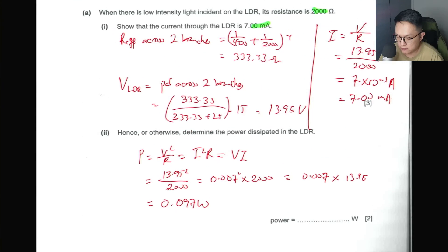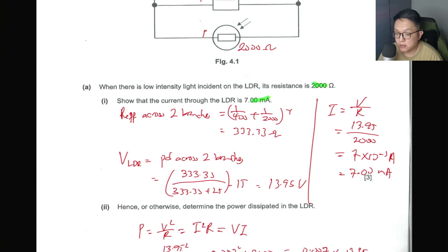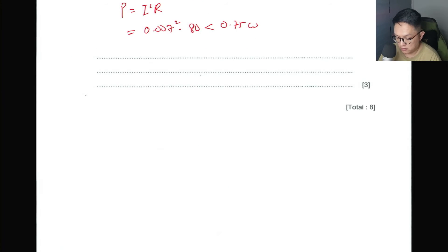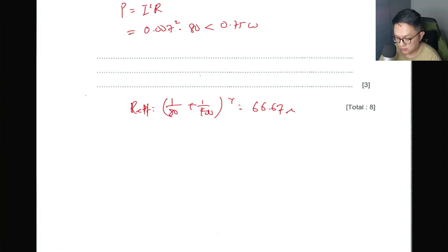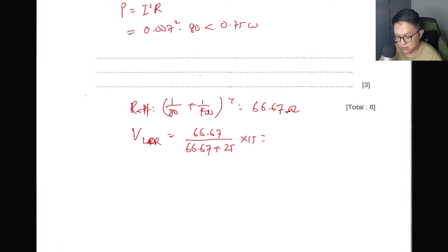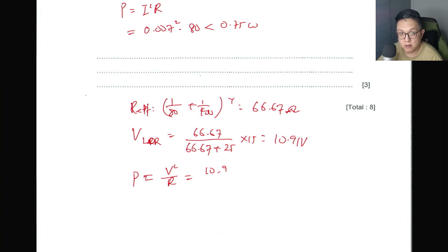Repeating the steps with R_LDR = 80 Ω: R_eff = 1/(1/80 + 1/400)⁻¹ = 66.67 Ω. Then V across the LDR = (66.67 / (66.67 + 25)) × 15 = 10.91 V. Power dissipated: P = V²/R = 10.91² / 80 = 1.5 W, which is more than 0.75 W, meaning the LDR will be damaged.